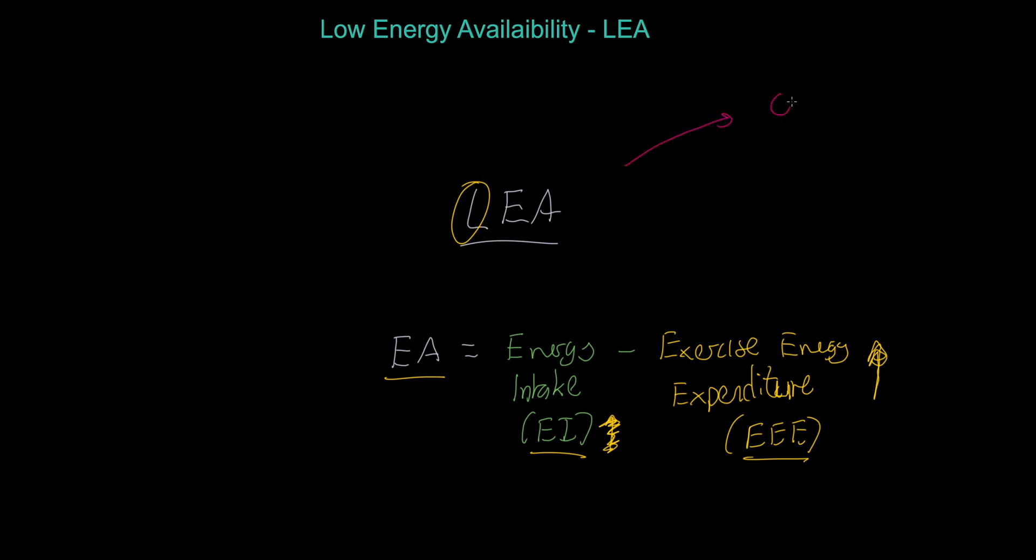So when does it occur? It occurs when we've got low EI, low energy intake, and it has to occur also in relation to exercise energy expenditure. So this relationship is insufficient. We are not taking enough energy to power that exercise energy expenditure.